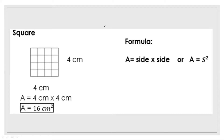We read it as square centimeter — the small 2 means it is squared. So the answer is read as 16 square centimeters. Sometimes we also use square meters (m²) or square inches (in²). Whenever there is a small 2 on top, we read it as 'square' first, then the unit — whether it's inches, centimeters, or meters.